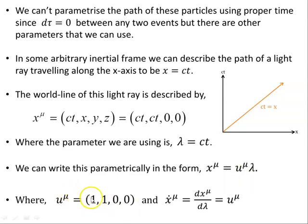We can write this parametrically in the form x mu is u mu lambda, where u mu equals 1, 1, 0, 0 and x dot mu, if you differentiate this with respect to the parameter lambda, you're just going to be left with u mu here. Now, the next video is given over to how this comes about. I'm going to in that video, so please do watch it after this one, show how this comes about in more general form as well. That's the focus of the next video. I'm just going over some ground here, some generalities about photon four velocity.